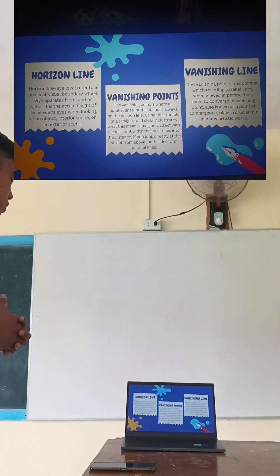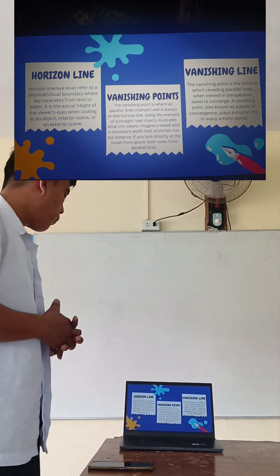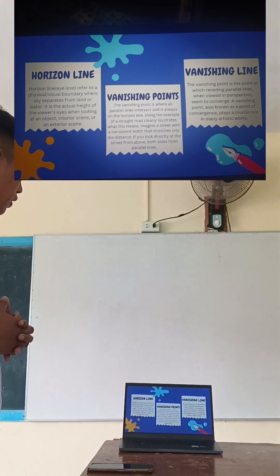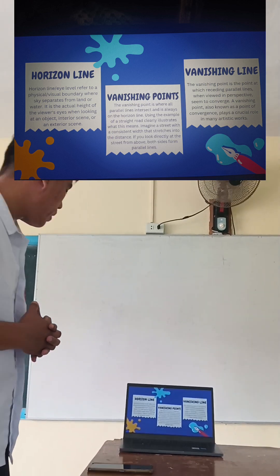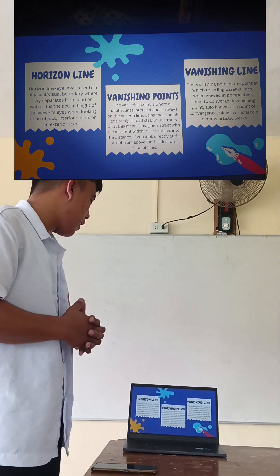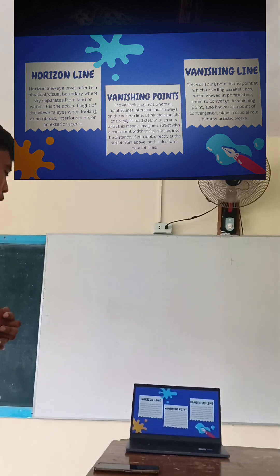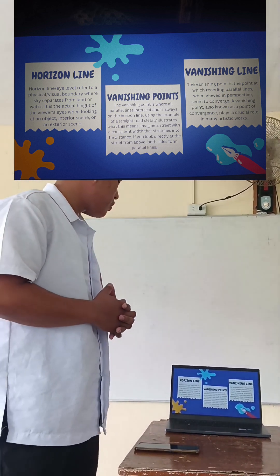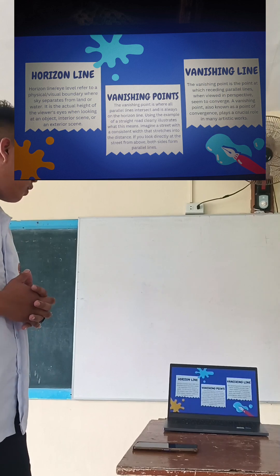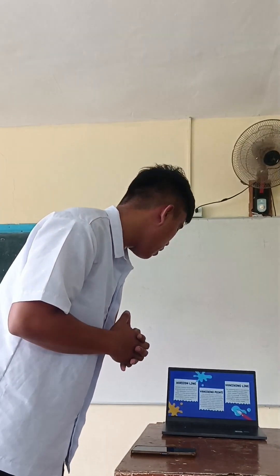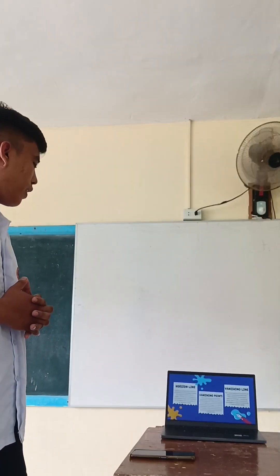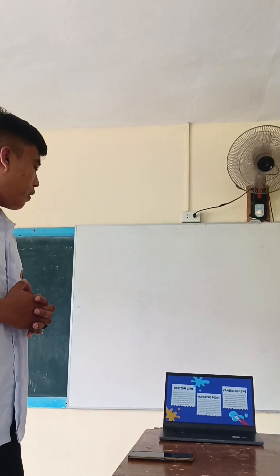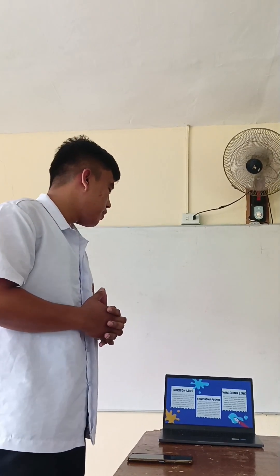Next is vanishing points. The vanishing point is where all parallel lines intersect, and is always on a horizontal line. Using the example of a straight road clearly illustrates what this means. Imagine a stretch of road going into the distance — if you look directly at the street from above, both sides form parallel lines.